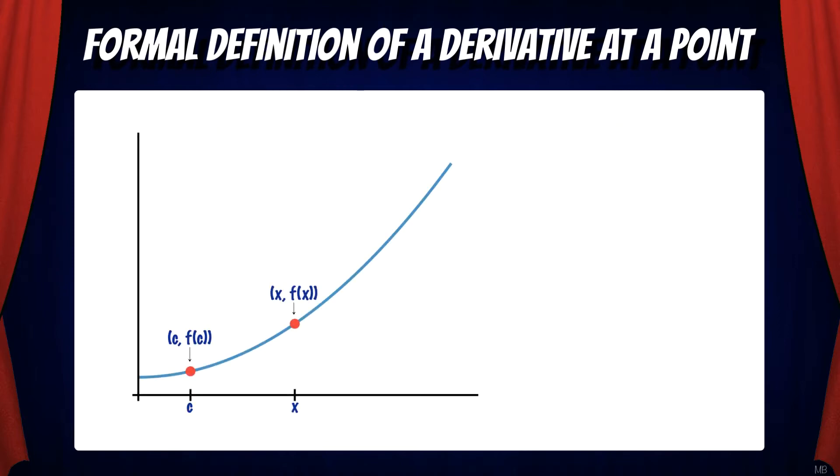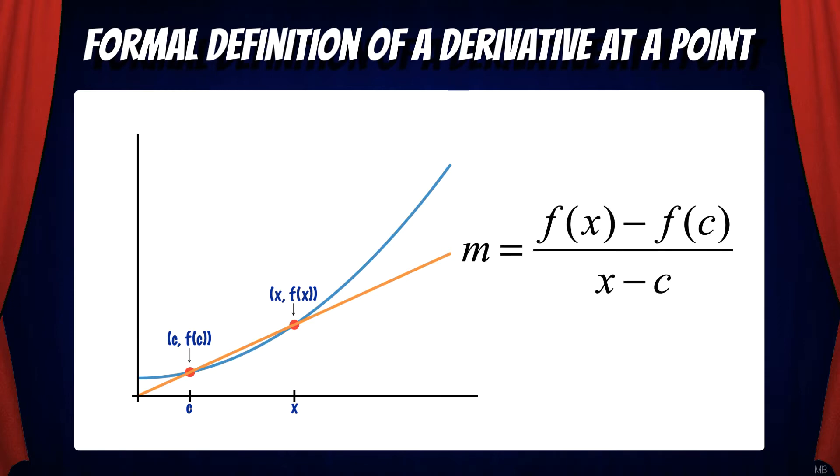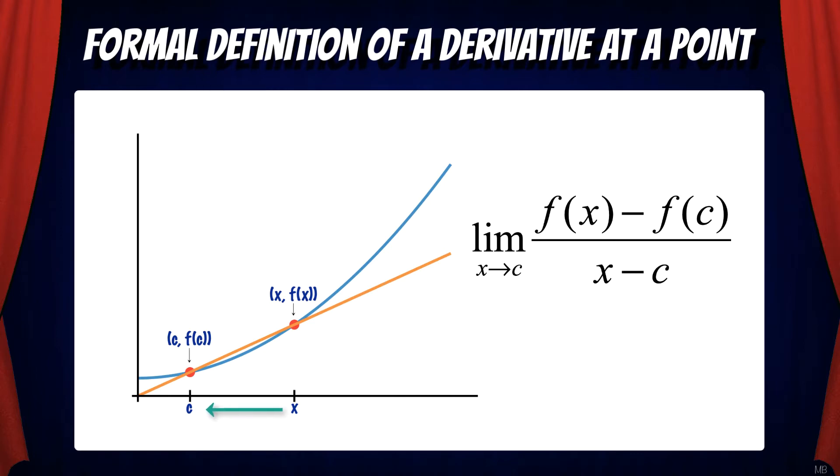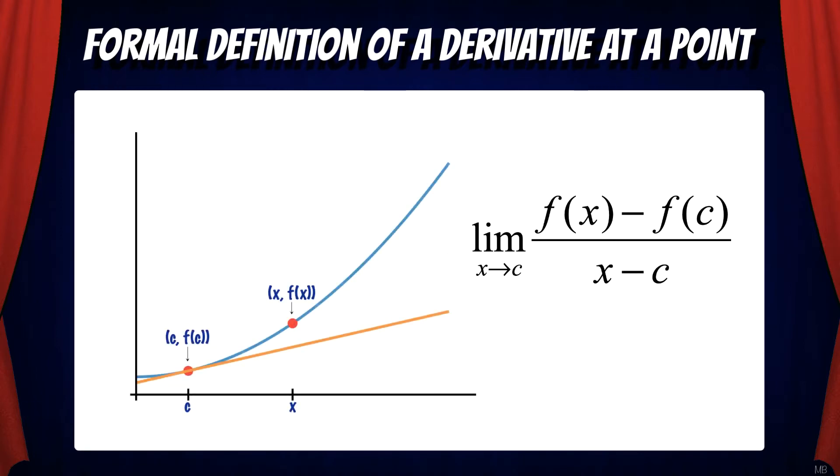So here's our graph. We're going to start with the point c, f of c. Then we have another point x, f of x. We want to find the derivative at the point x equals c. So what we're going to do is find the slope of the secant line that connects the two points and take the limit as x approaches c. Since we're taking the limit as x approaches c, x moves closer and closer to c. So our secant line becomes a tangent line at x equals c and the slope of that tangent line is the instantaneous rate of change at x equals c.